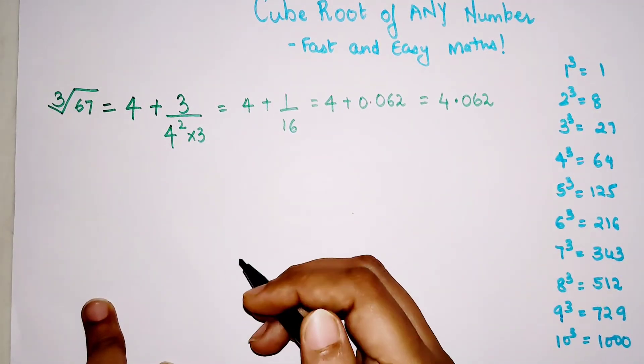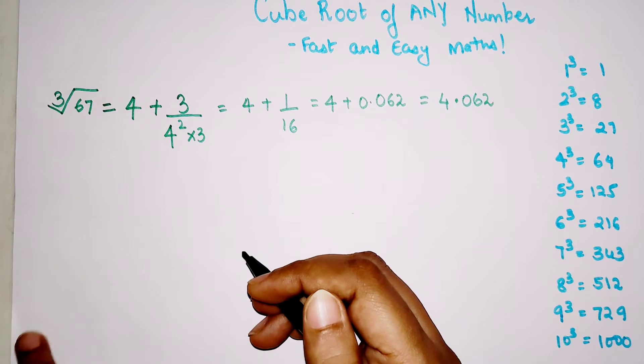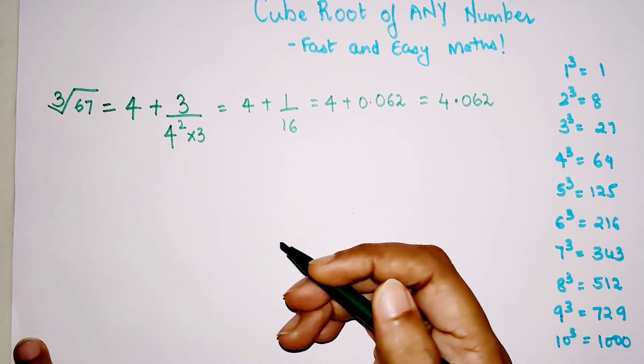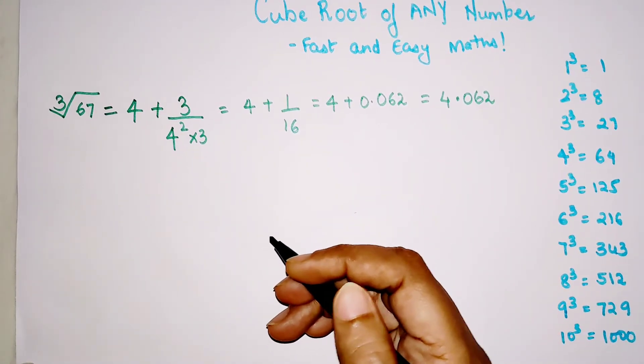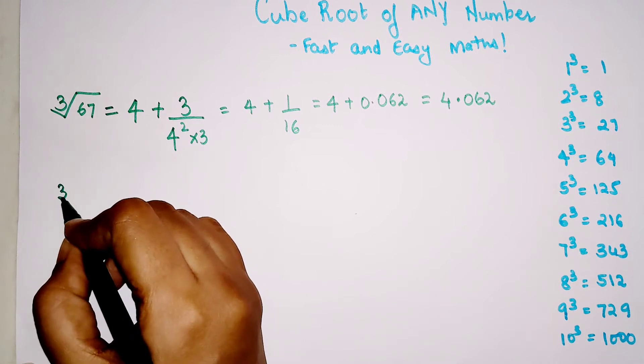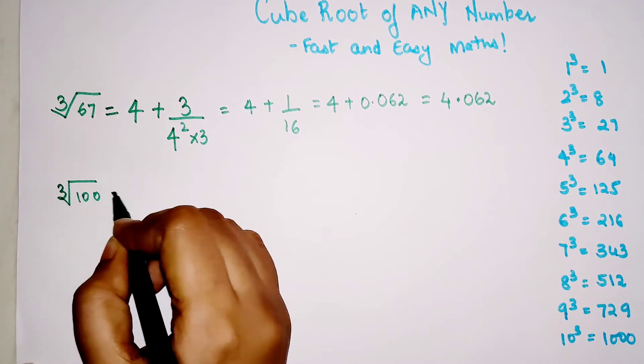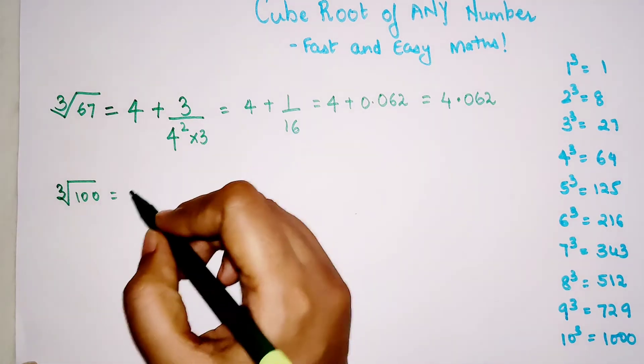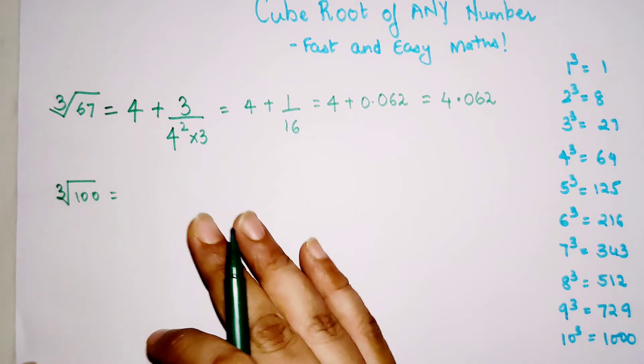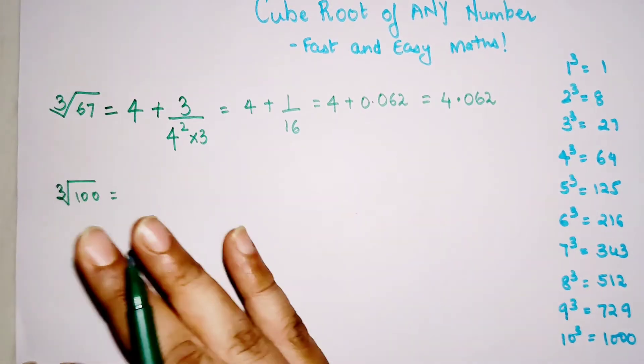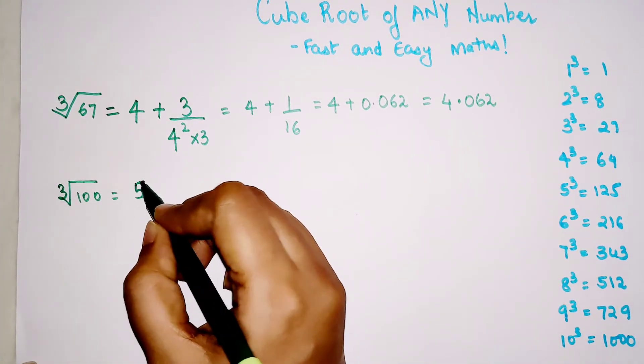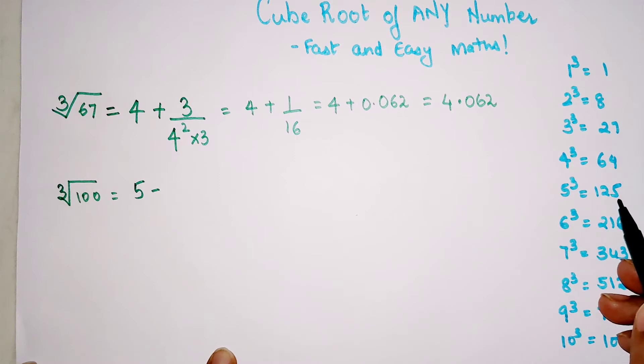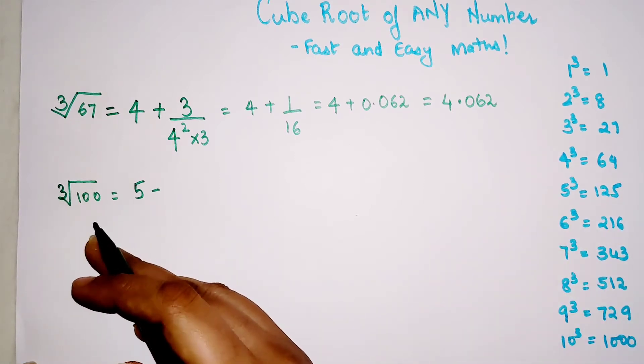Now let's quickly figure out the cube root of 100. According to our logic, 100 is lying between 64 and 125, so let's take it with 5. Here we added in the previous example, so I'm showing you one more scenario where you will subtract. We're subtracting because 125 is ahead of 100.